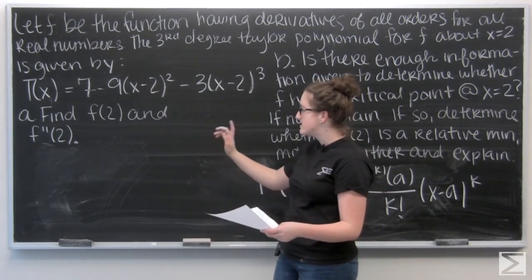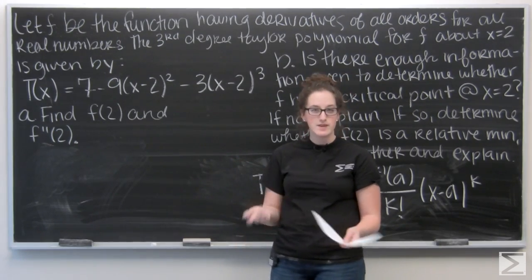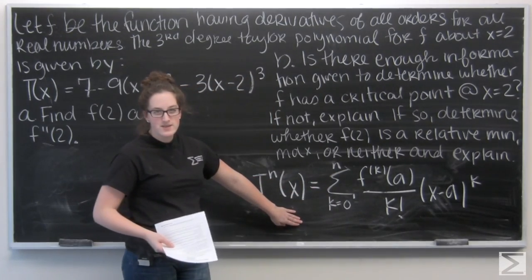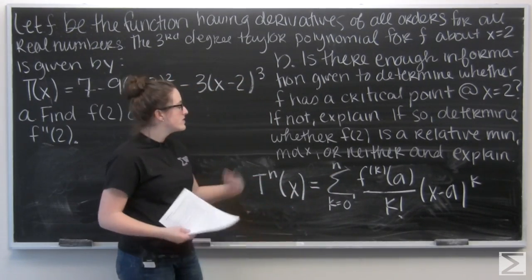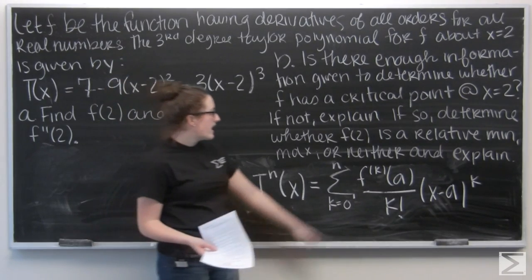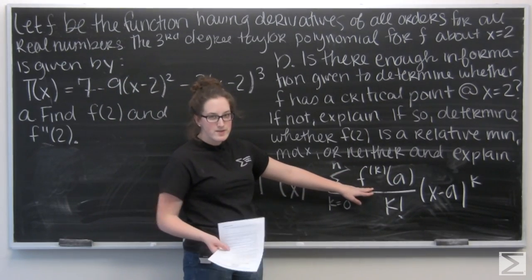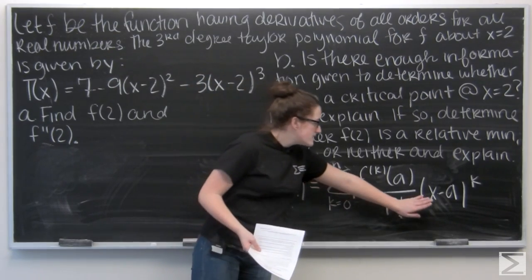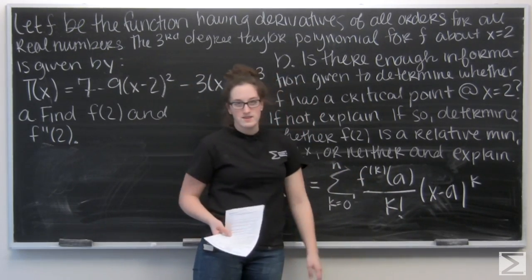So, part A asks to find f of two and f double prime at two. Well, I've already written down the summation notation for Taylor series, so let's take a look at it. I have the kth derivative of x at wherever it's centered divided by k factorial times x minus a to the k.